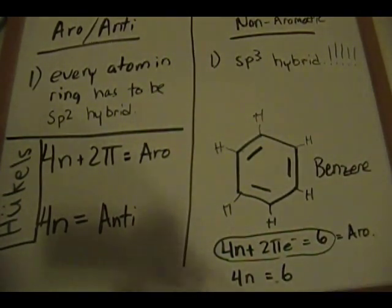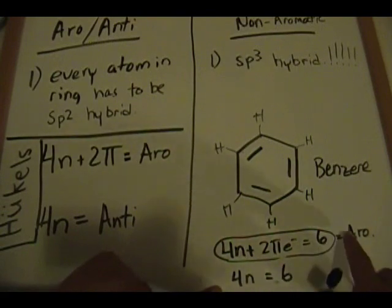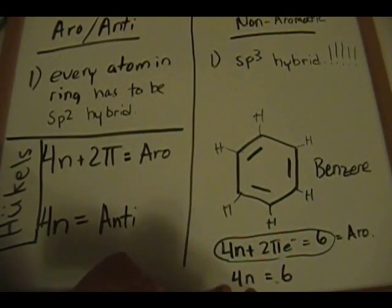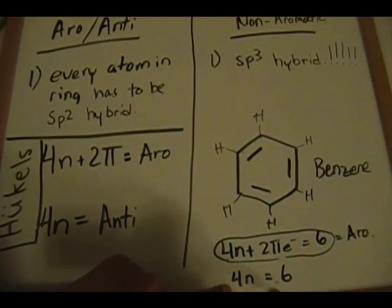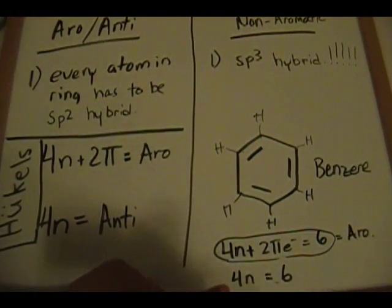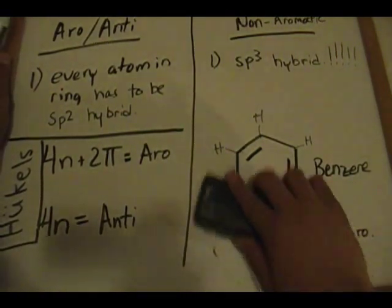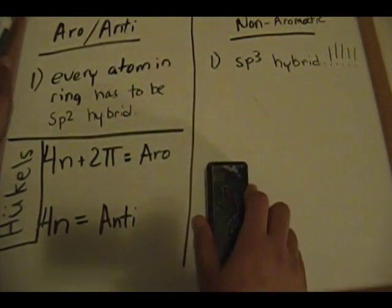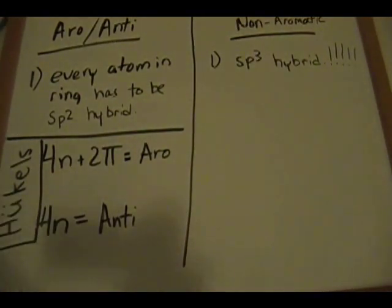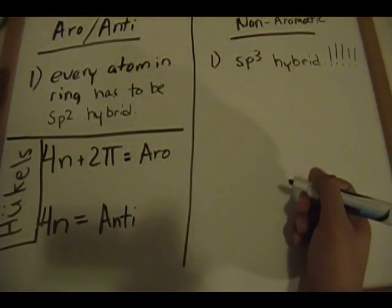Let's also check against the 4n formula: if n=0, result is 0 (not 6); if n=1, result is 4 (not 6); if n=2, result is 8 (not 6). Since no whole number for n satisfies 4n = 6, the benzene ring does not fit the anti-aromatic category. Therefore the benzene ring is confirmed aromatic.